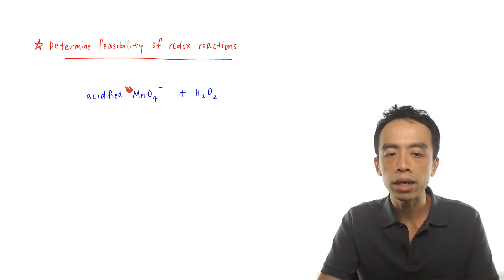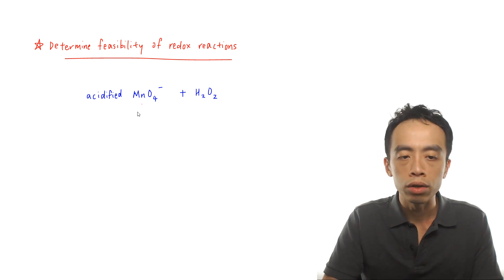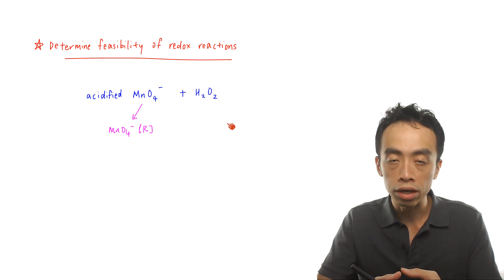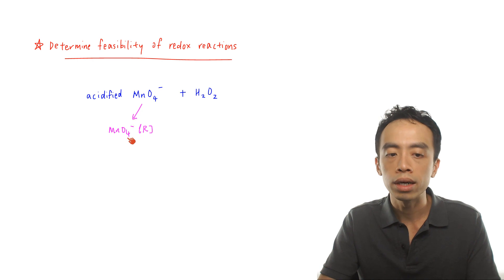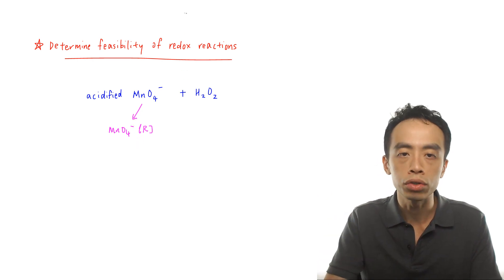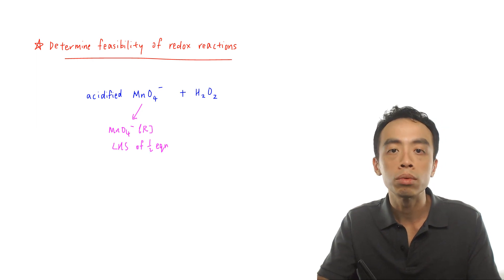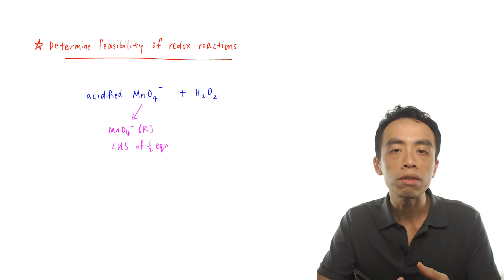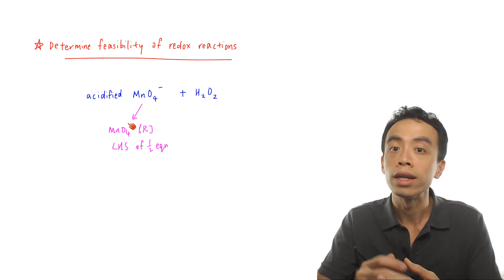If I'm adding permanganate to H₂O₂, permanganate is a strong oxidizing agent, so we know that permanganate will undergo reduction. MnO4⁻ will undergo reduction, so later we will refer to the data booklet and choose the relevant half equation. Since all the half equations in the data booklet are written in reduction form, when I look out for MnO4⁻, I only need to look for it on the left-hand side of the half equation. This saves time because if a species undergoes reduction, we look for it on the left-hand side.